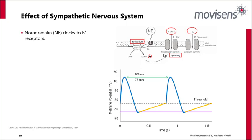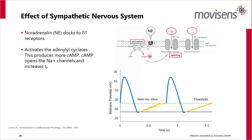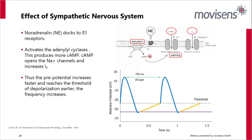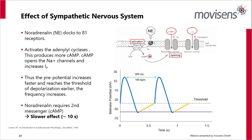The effect of the sympathetic nervous system: noradrenaline docks to the beta-1 receptors, activating adenylyl cyclases, which produces more cyclic adenosine monophosphate — a derivative of ATP. This opens the sodium channels and increases the current of the pacemaker cells in IF, so the pre-potential increases faster and reaches the threshold of depolarization earlier, increasing frequency. Noradrenaline requires a second messenger — the cyclic adenosine monophosphate — which is why it has a slower effect of approximately 10 seconds.